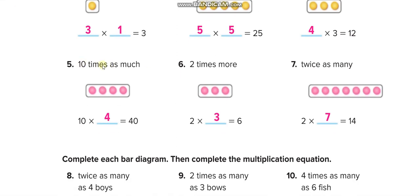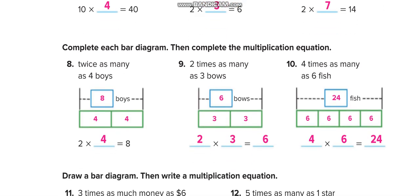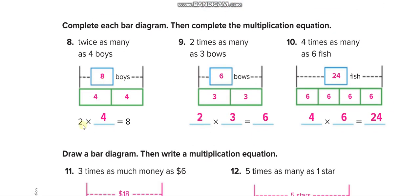Four times three equals twelve. Ten times what equals forty? Four. Two times what equals six? Three — draw three counters. Two times what equals fourteen? Seven — draw seven counters. Two times what equals eight? In the bar diagram, the top one shows the total, and this number tells you how many boxes.